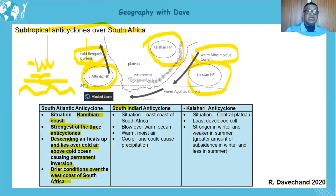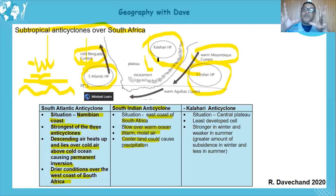The South Indian anti-cyclone is situated east of South Africa. It blows over warm ocean, and especially in summer when it moves from this high to a low pressure, it brings in warm moist air. The cooler land can cause precipitation — as this warm moisture comes over the cooler land compared to the ocean, there will be condensation, cloud formation, and rainfall in all forms including hail.